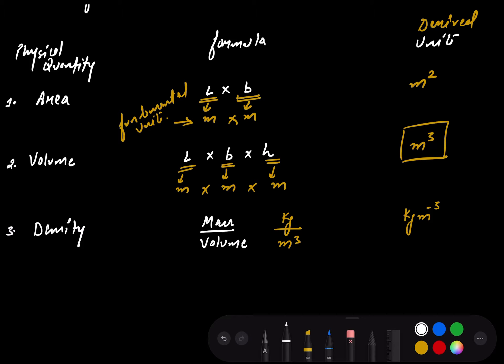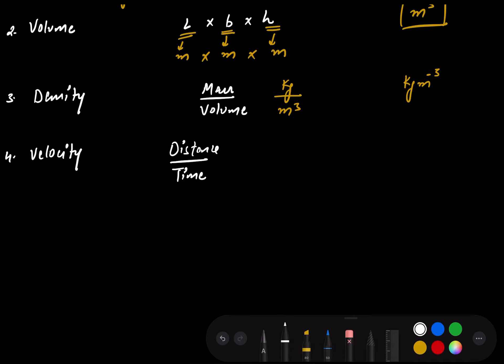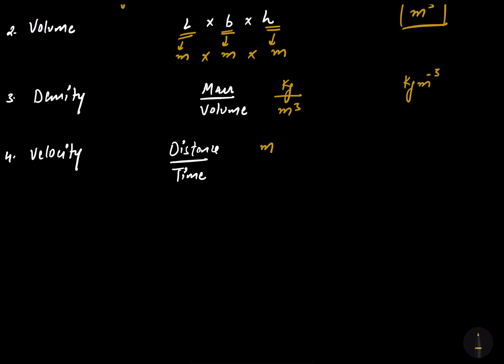The fourth quantity is velocity. What's the formula for velocity? It's distance covered per unit time. The unit of distance is meter and the unit of time is second, so the derived unit for velocity comes out to be meters per second.